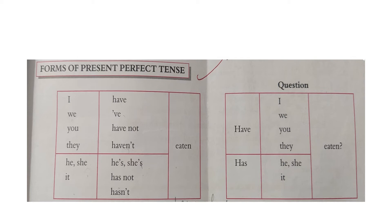When we use present perfect tense, we use the past participle form of the verb. Present perfect tense is used to express an action completed in the past but linked with the present. The table helps us to make sentences in the affirmative, negative, and interrogative.